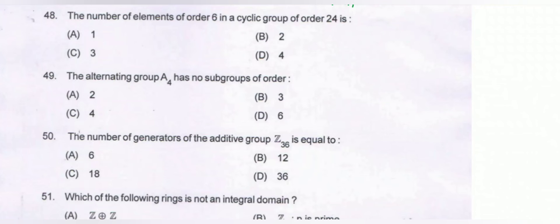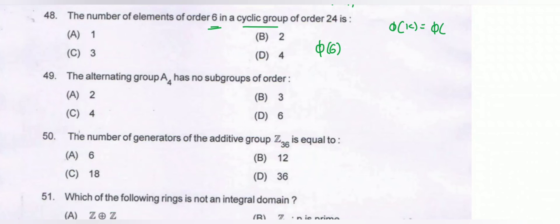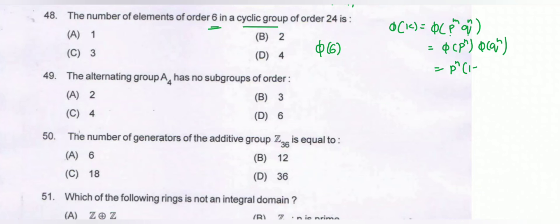Question number 48: the number of elements of order 6 in a cyclic group of order 24. The answer is φ(6), where φ is Euler's phi function. To compute φ(k) where k equals p to the power m times q to the power n, we use φ(p^n) equals p^n times (1 minus 1 upon p).